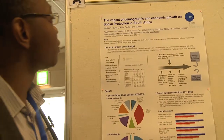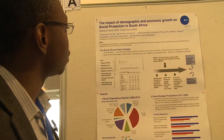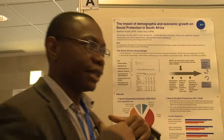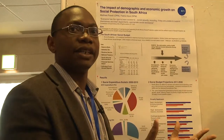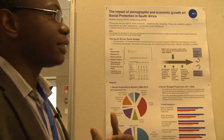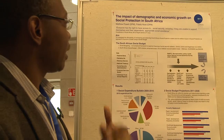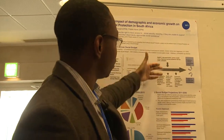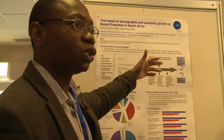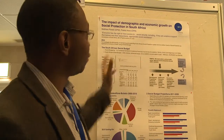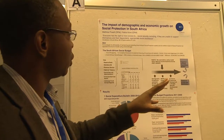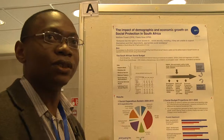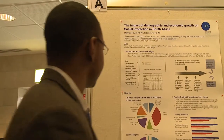The Department of Social Development also wanted not only the ability to look at how much will be spent in the future, but also the capacity to carry out distributional analysis. So an additional component is a micro-simulation tool which forecasts social grant expenditure into the future and also allows you to look at the impact on poverty and inequality.